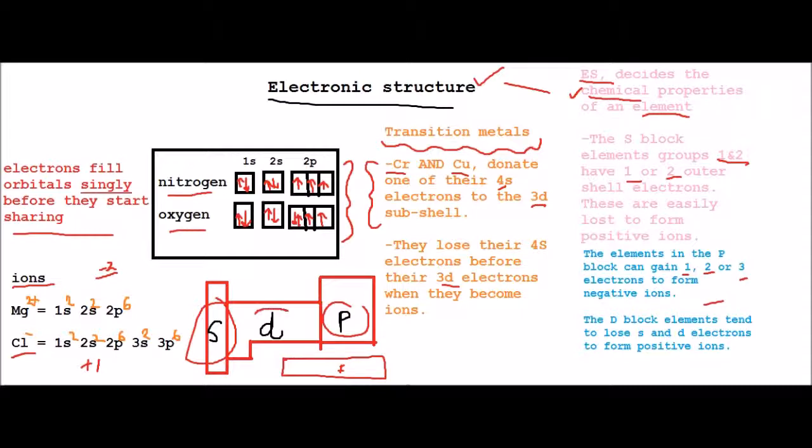And then the next fact here is that the D block elements tend to lose S and D electrons to form positive ions.